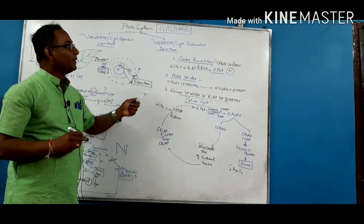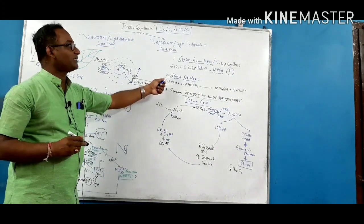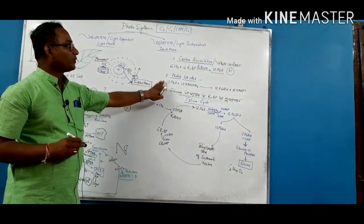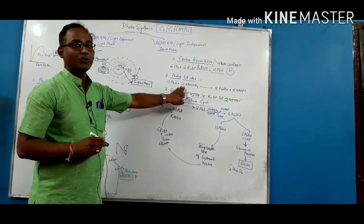Now, the first step is PGALD, PGA or phosphoglyceric acid aldehyde to convert aldehyde, phosphoglyceraldehyde. Now, what does it do?